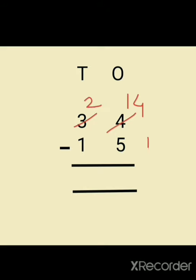After this we can subtract: fourteen minus five which will be equal to nine, and two minus one which will be equal to one. So thirty four minus fifteen will be equal to nineteen.